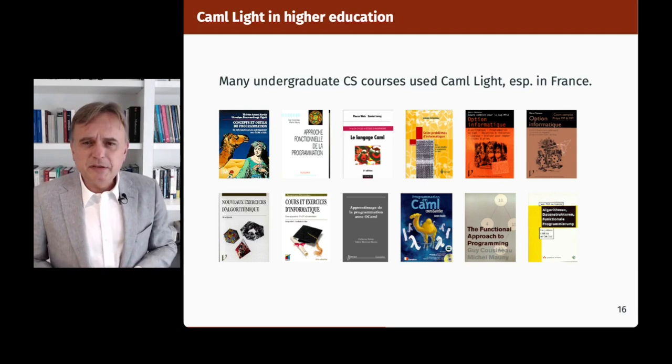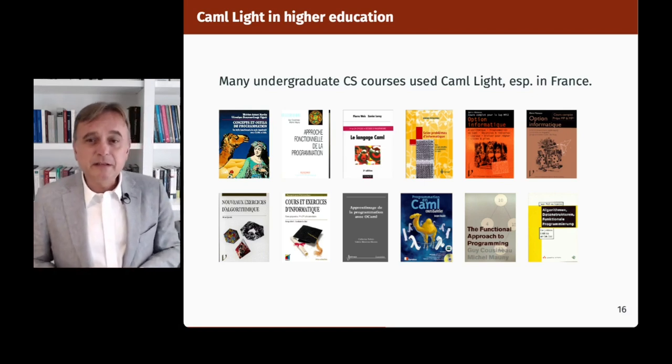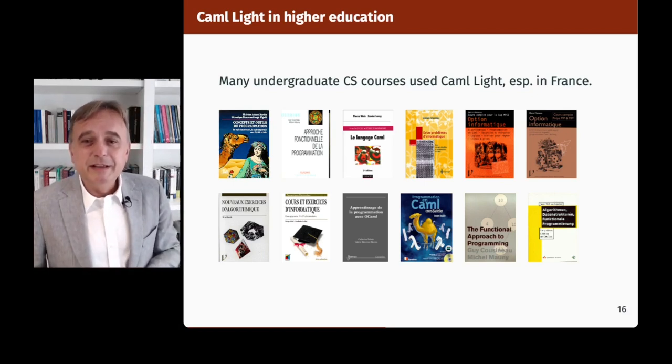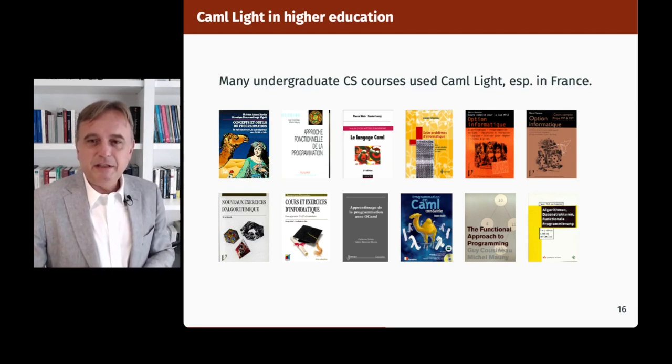There was also a top-level interactive loop. It was bootstrapped and quite portable — we made it available for Unix workstations, but also there was a port for original macOS and even a port for MS-DOS running in 640K of RAM. It was quite successful in higher education, especially for undergraduate CS courses, sometimes as the first programming class, particularly in France. These are some of the textbooks that were written in the 90s corresponding to lectures being given in Caml Light.